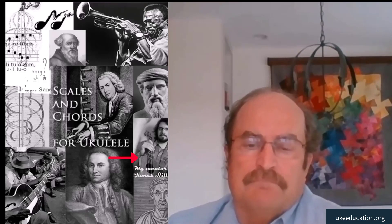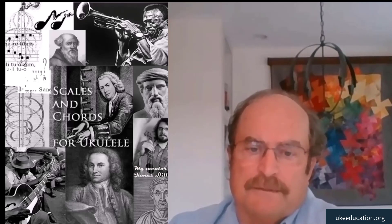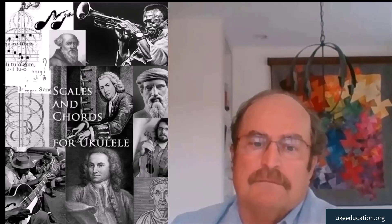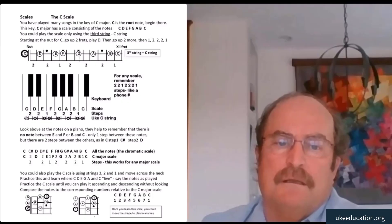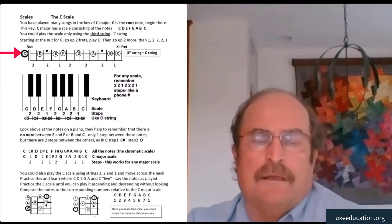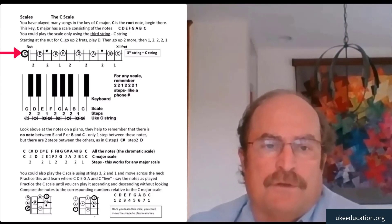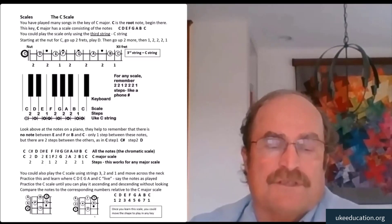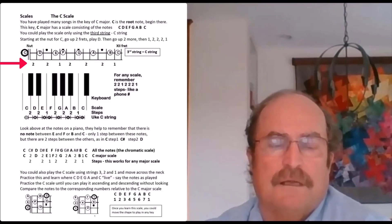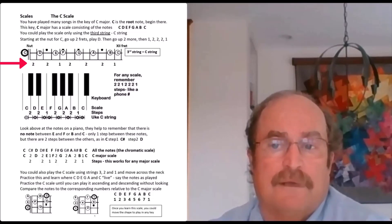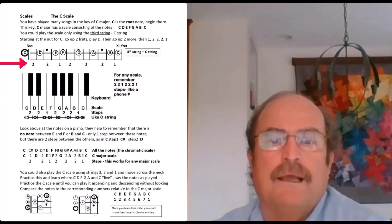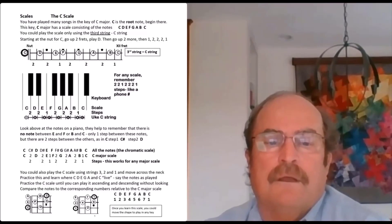Let's get down to the music behind the vibrations of the strings, built on a scale. Let's look at the C scale using your C string — the third string for GCEA tuning. In baritone tuning use the second string or B string. Start at the open C, go up two frets to D, two more to E, one fret to F, two to G, two to A, two to B, and finally C for the octave.